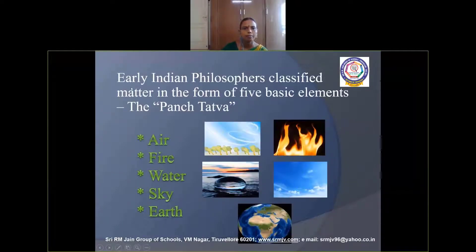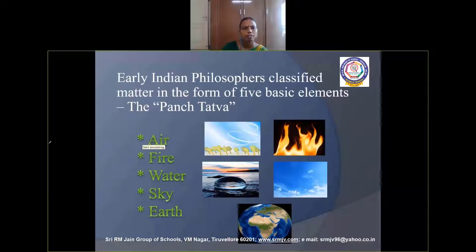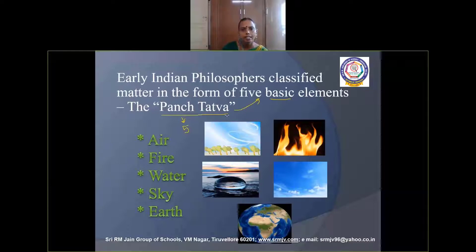Classification of Matter. Early Indian philosophers classified matter in the form of five basic elements called Panj Tattva. Panj means five, and tattva refers to the basic elements — it is a Sanskrit word. The five basic elements are air, water, fire, sky, and earth.